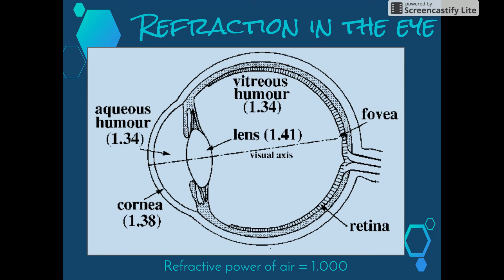Therefore, the greatest degree of refraction in the human eye occurs when light moves from the surrounding air into the cornea of the eye, since the change in refractive power of the media is the greatest at this point. The greater the difference in the refractive power of two media, the more the light is refracted when it passes from one medium to another.